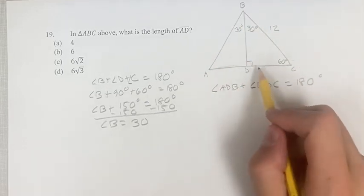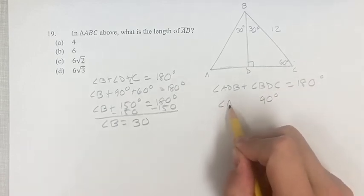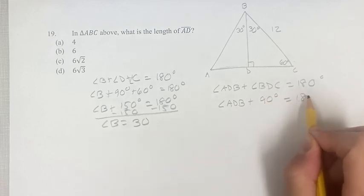And angle BDC, that's this angle we were just talking about over there, is 90 degrees. So angle ADB plus 90 degrees is equal to 180 degrees.